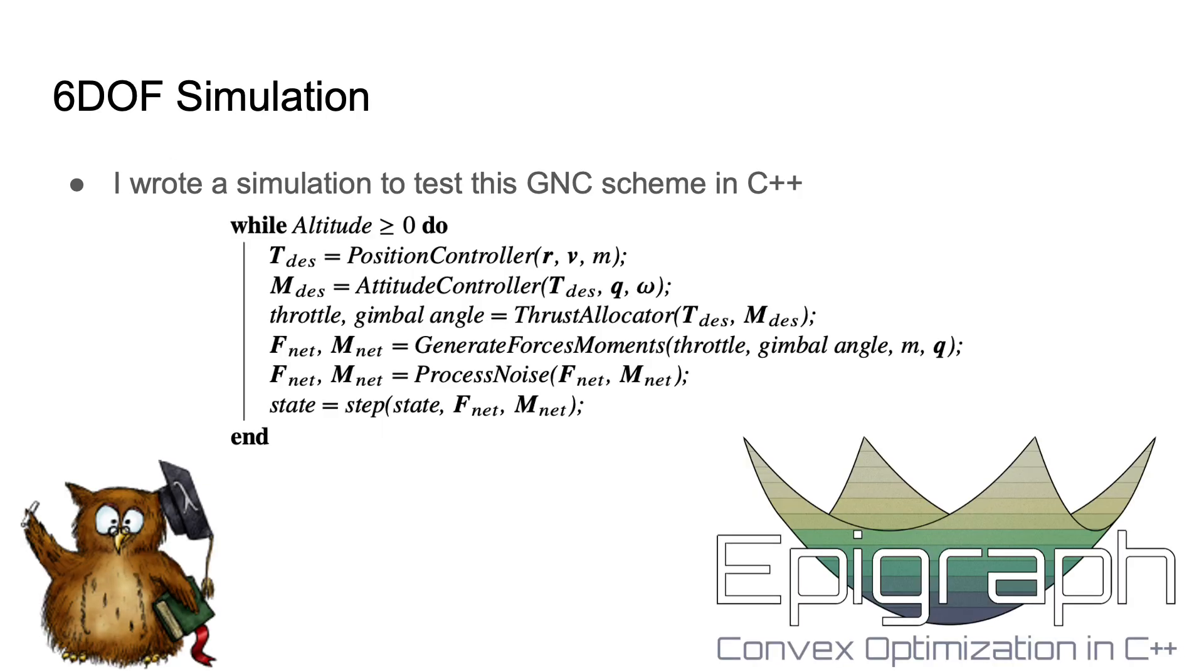To test this guidance and control scheme, I wrote a 6-degree of freedom simulation in C++. The pseudocode for this simulation is shown on the slide. To write this simulation, I used the Eigen library for matrix and vector operations, as well as quaternion rotations. For solving the convex problem, I used the Epigraph library, which allowed me to specify my constraints, and it then took these specifications, packed them into one matrix, and then fed it into the ECOS solver, or the Embedded Conic Solver, which then gave me the optimal trajectory.